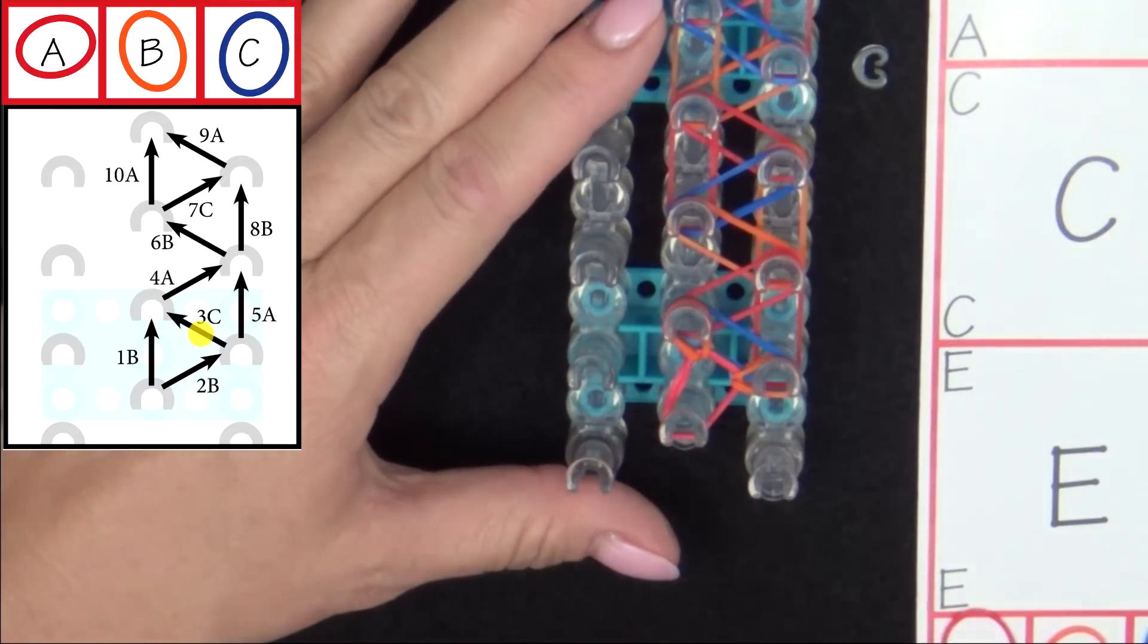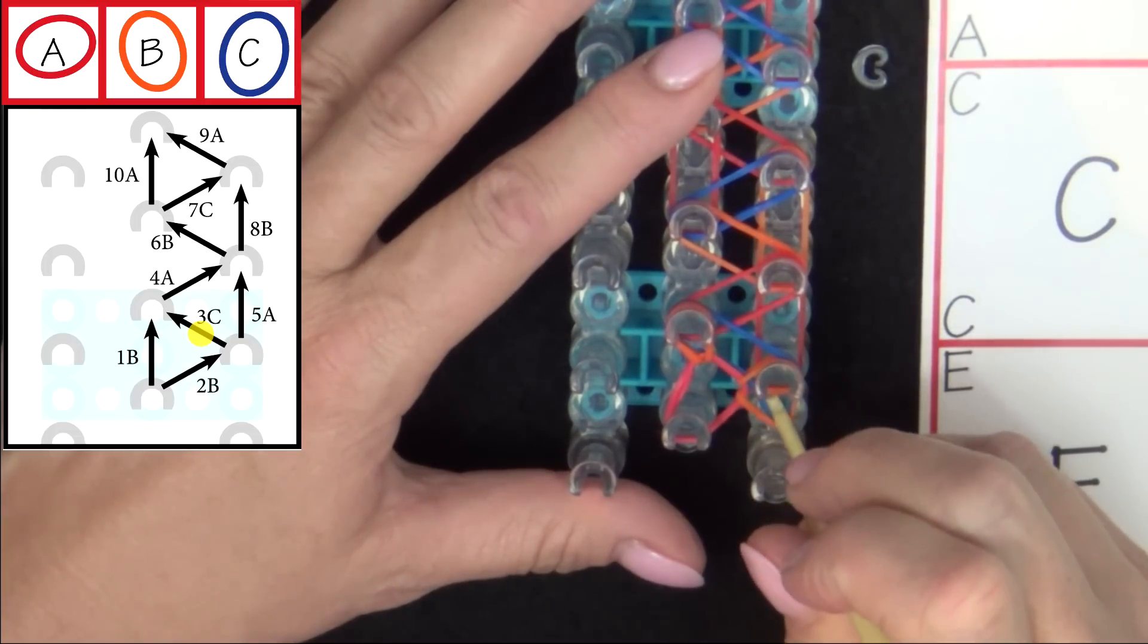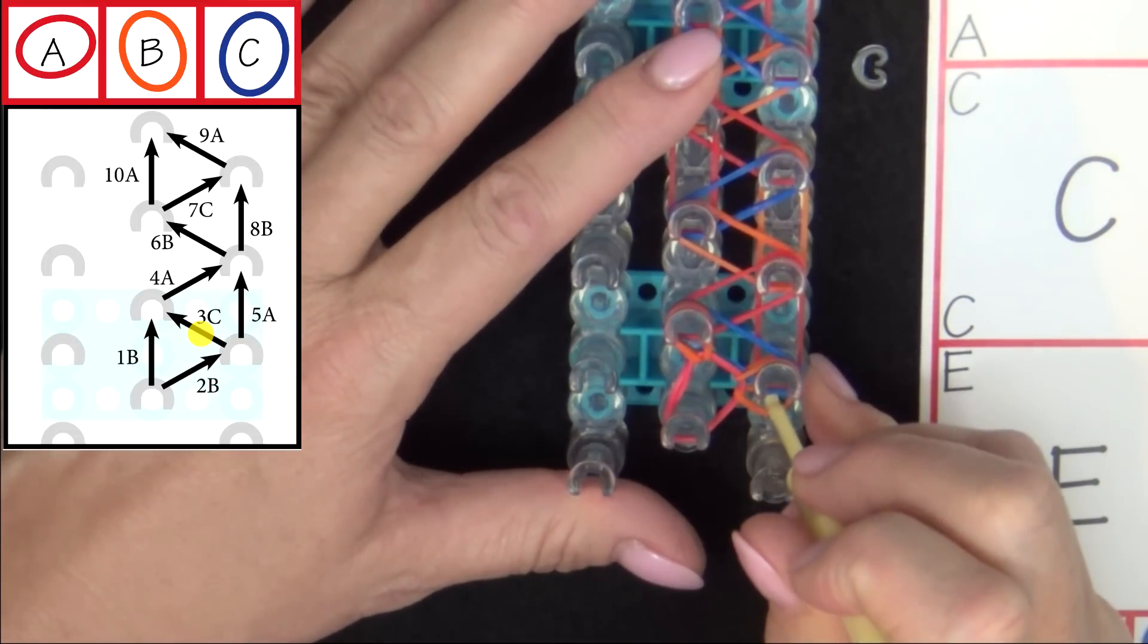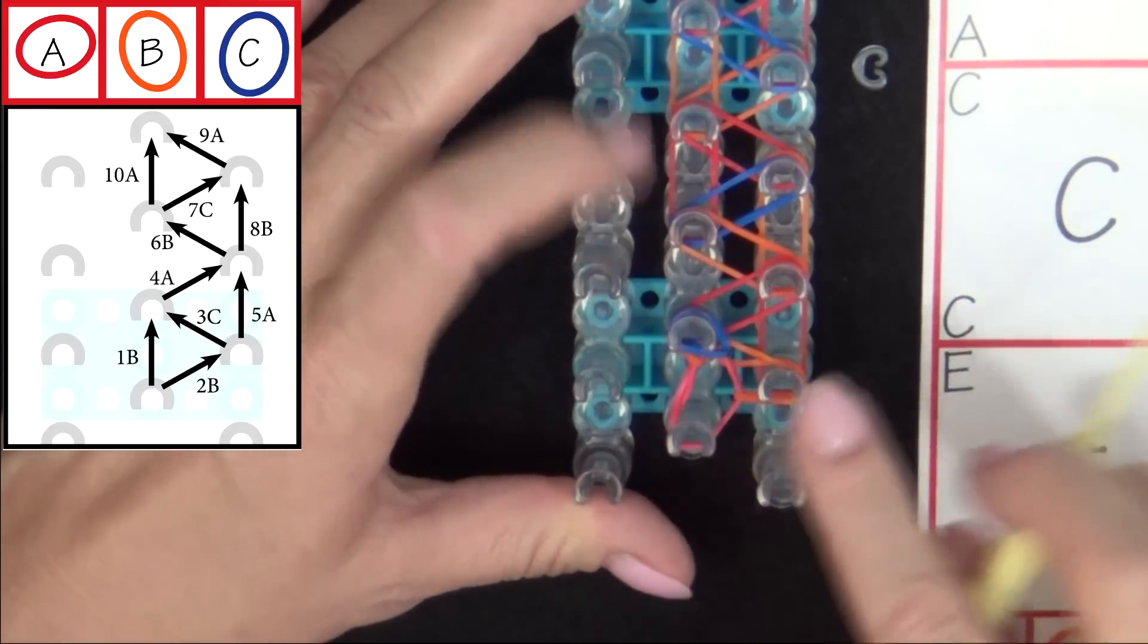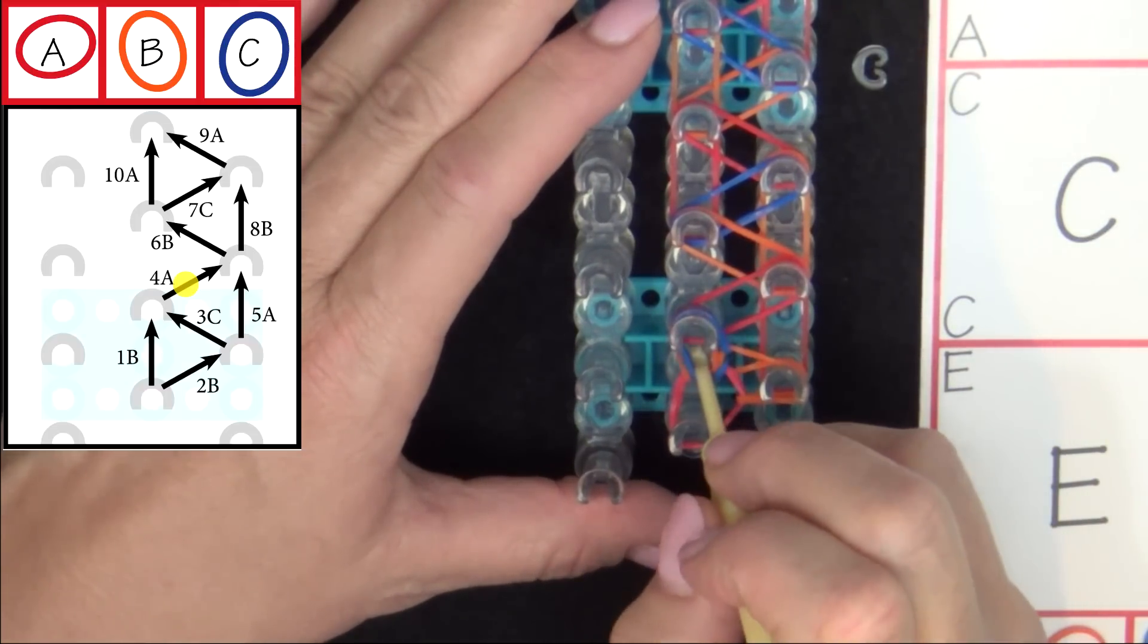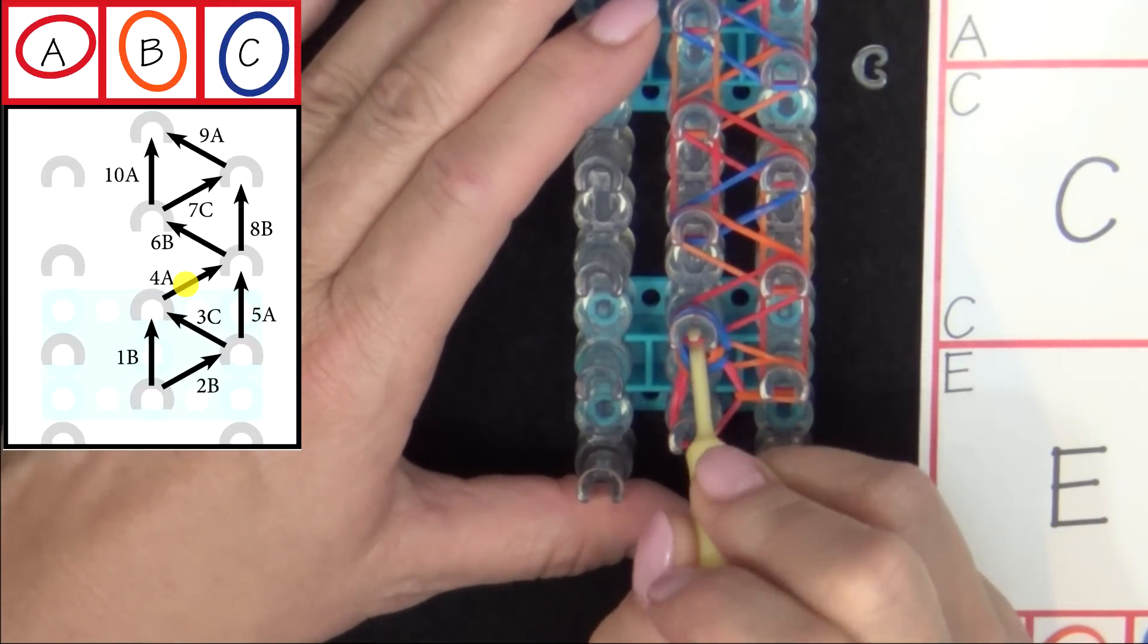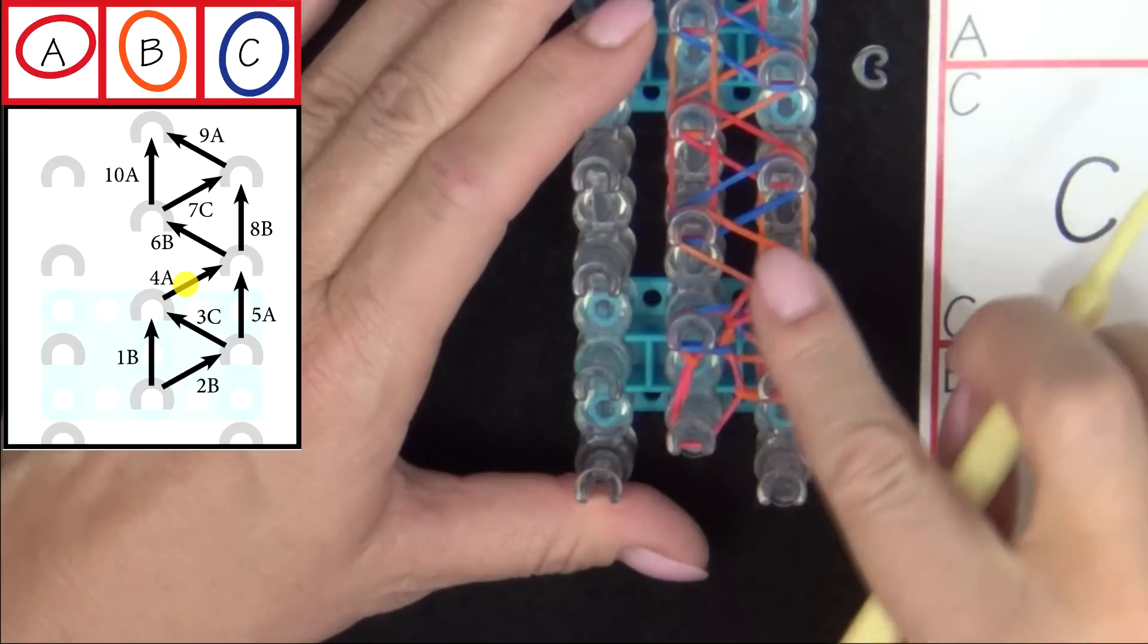Then we'll loop 3C. Pull back your band until you find that C band. And then loop that to the center pin. Then you're going to loop 4A. You pull all those bands back. Find that A band. And loop it out to the side.